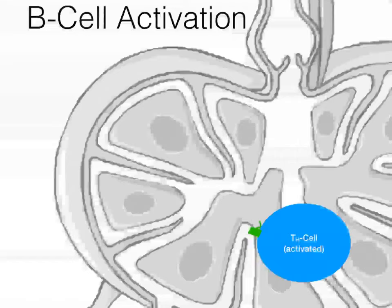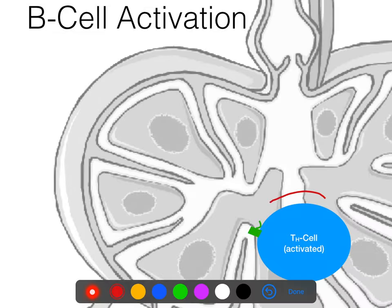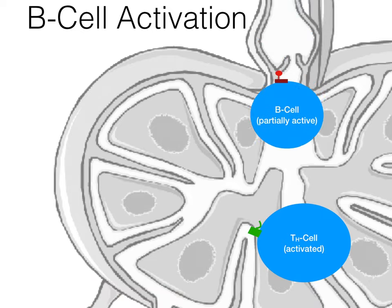Here we have a lymph node — this is one of the lymph nodes that the activated helper T-cells spread to. Remember, at the end of our last video, when the helper T-cell became activated, it started replicating, and then a whole bunch of effector helper T-cells spread out to a whole bunch of different locations in the body. This is one of those lymph nodes it's hanging out in.